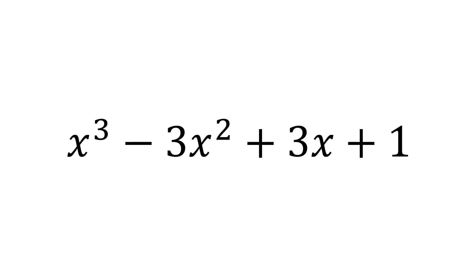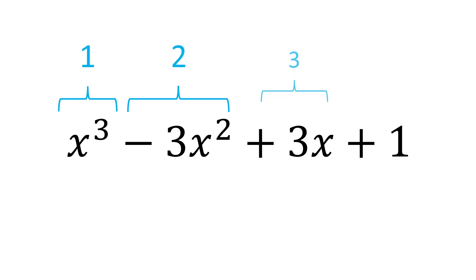x cubed minus 3x squared plus 3x plus 1 is a polynomial, because it is a sum of 4 monomials. Polynomials with 4 or more monomials are simply called polynomials. And that is a polynomial in a nutshell.